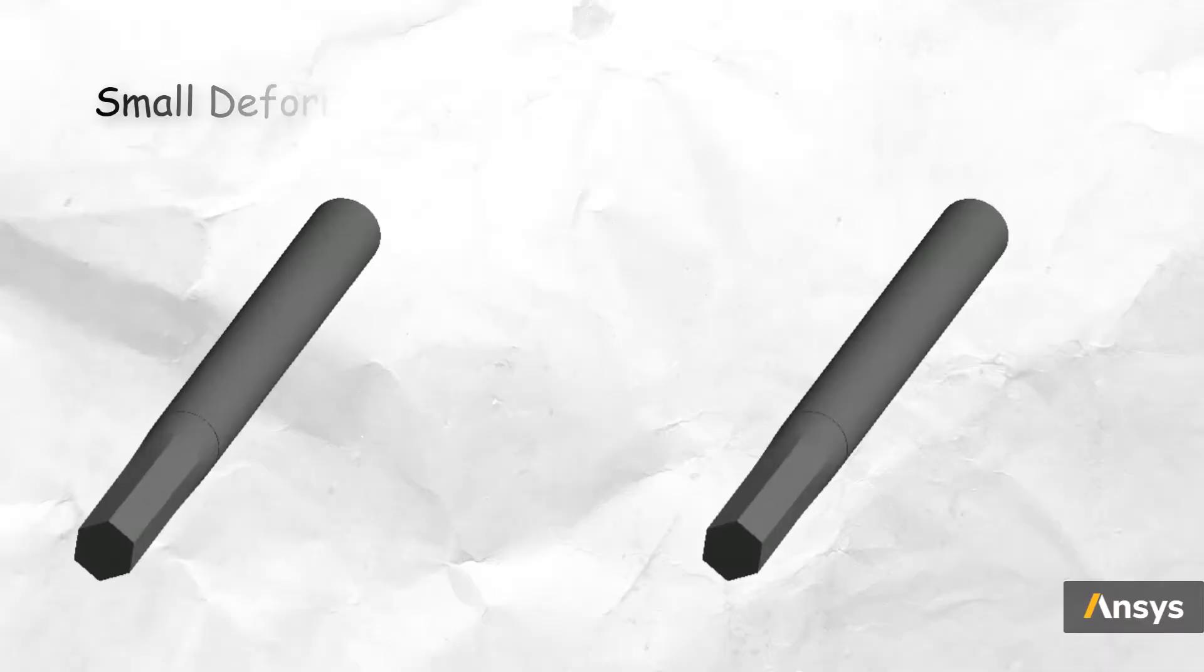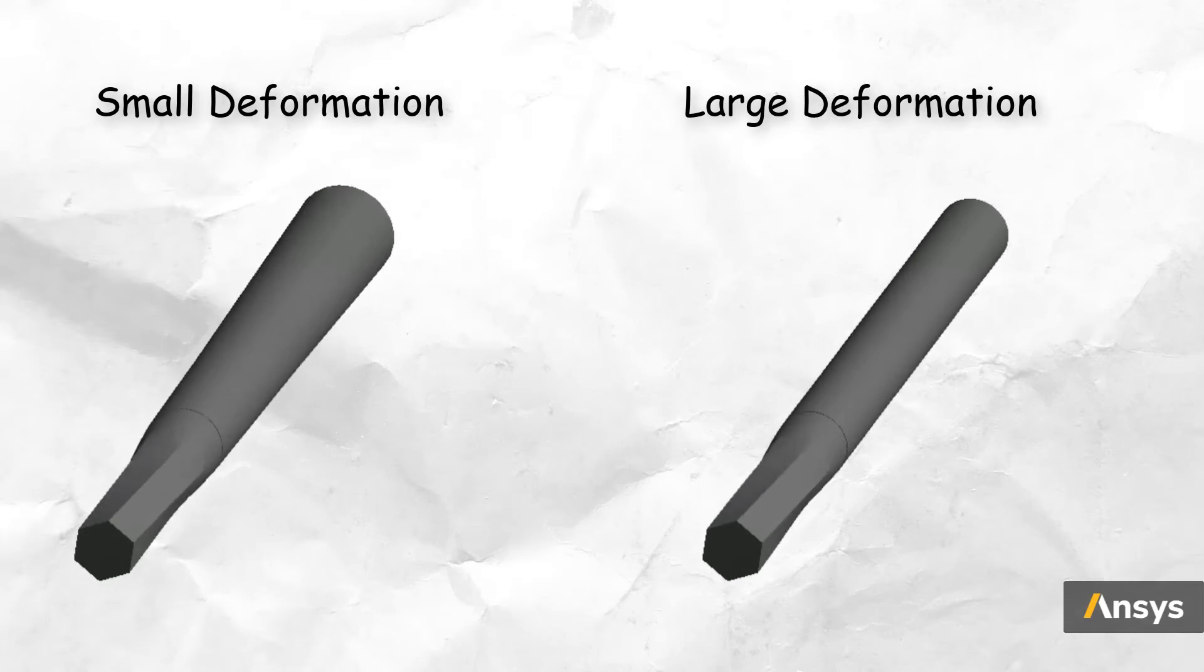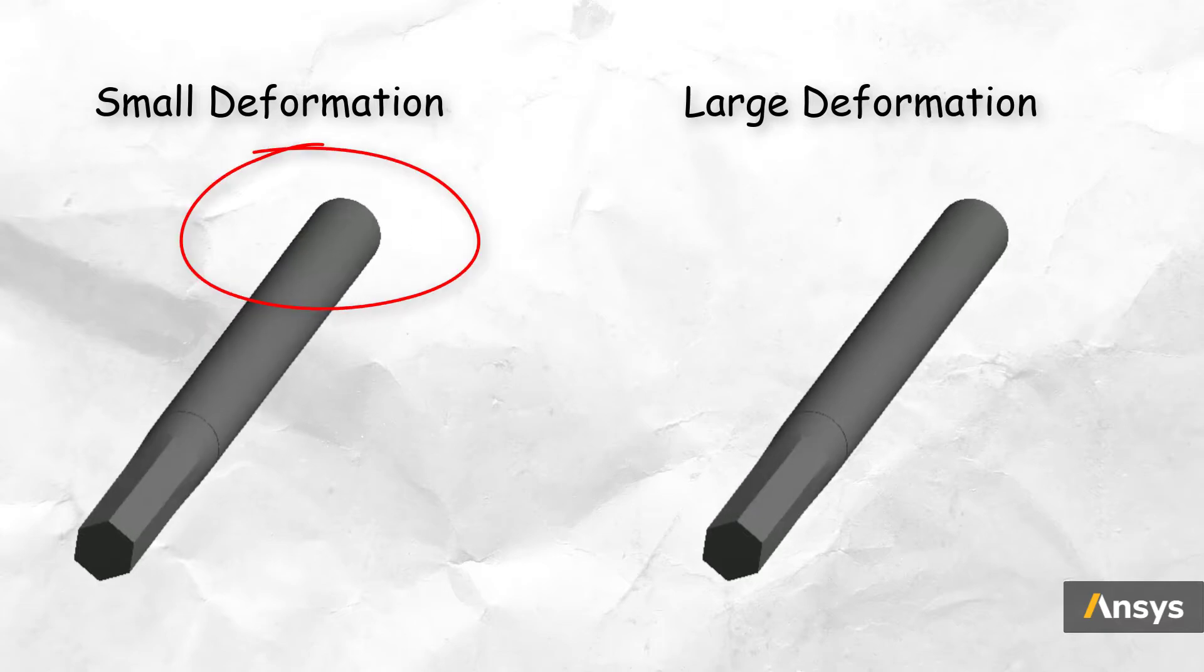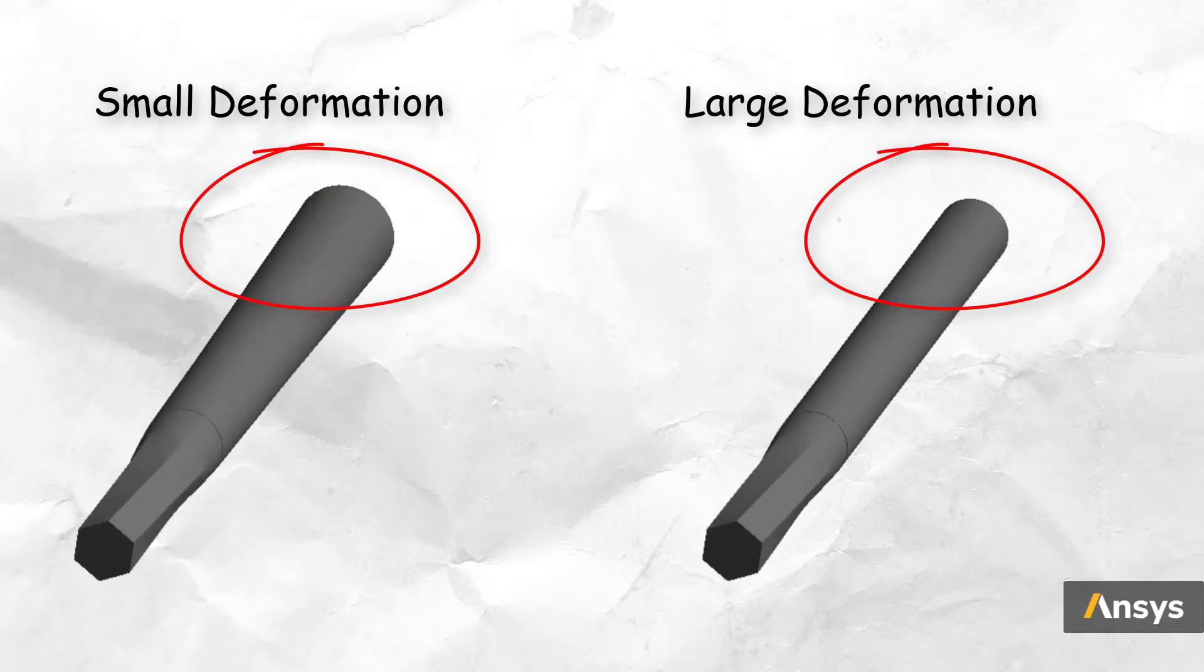So you can see that when a structure undergoes large rotation, it's important that we use large deformation formulation to calculate the system response. Let's simulate this scenario on a simple shaft and apply both small and large deformation formulation. We can see from these animations that the small deformation is resulting in a spurious radial growth, whereas large deformation formulation does not suffer from such an issue. Make note of this important recommendation while performing structural analysis.